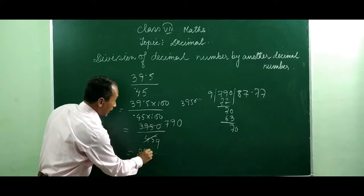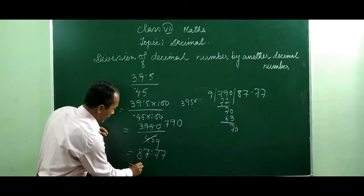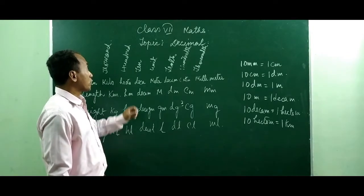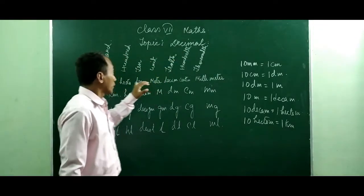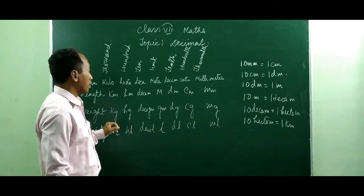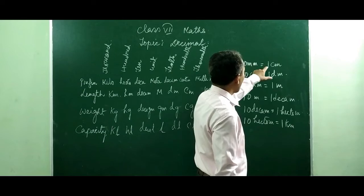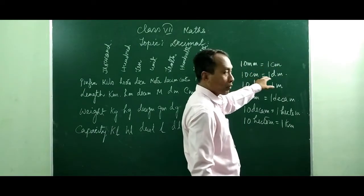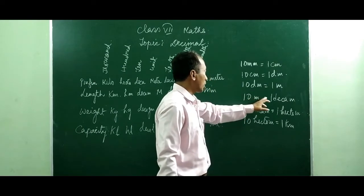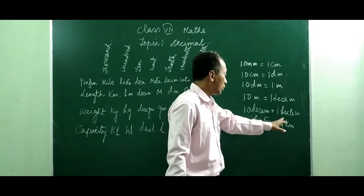So students, decimal has got a very interesting relation with the measurement system. This is the unit of measurement system. Here: 10 mm equals 1 cm, 10 cm equals 1 decimeter, 10 decimeter equals 1 meter, 10 meter equals 1 decameter, 10 decameter equals 1 hectometer, and 10 hectometer equals 1 kilometer.